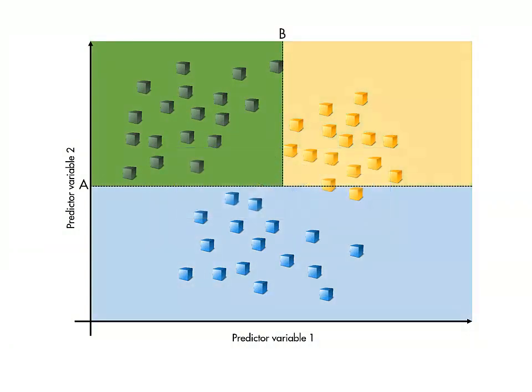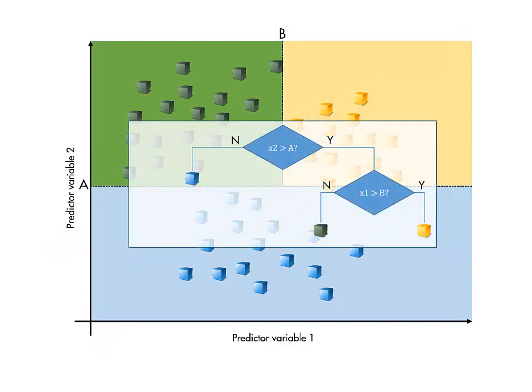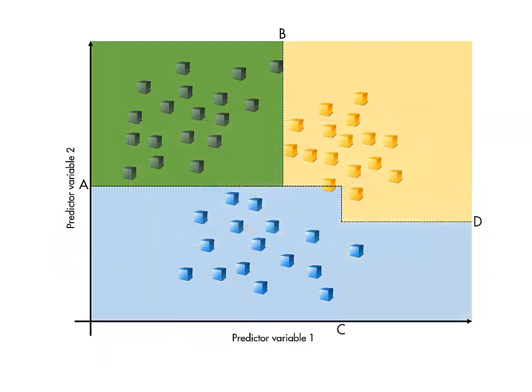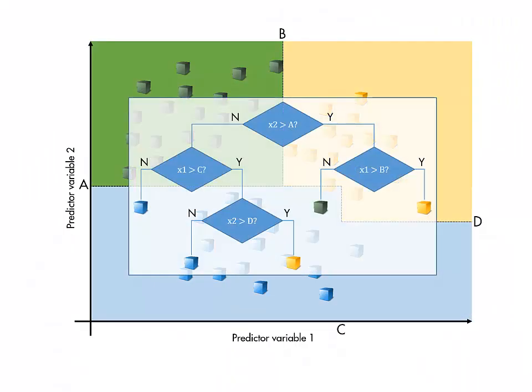Then the process repeats at the next level of the tree. This continues until all the branches terminate, which happens when no further splits on that branch can improve the criterion value.